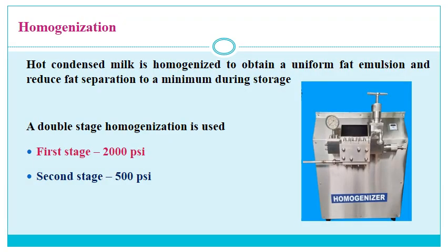The next stage is homogenization. Hot condensed milk is homogenized to obtain a uniform fat emulsion and reduce fat separation to a minimum during storage. The milk is forced through a very narrow aperture at high pressure, which breaks larger particles and fat globules and distributes them uniformly. A double-stage homogenizer is used: the first stage at 2000 psi and the second stage at 500 psi — similar to milk pasteurization.